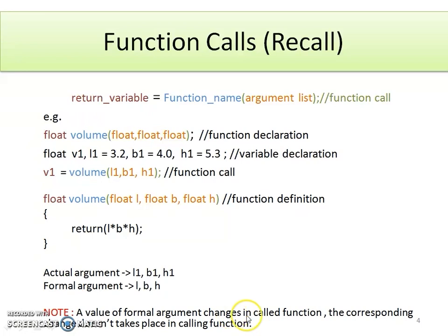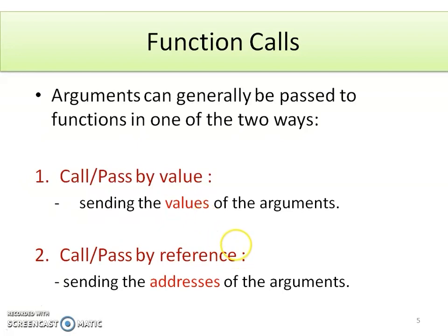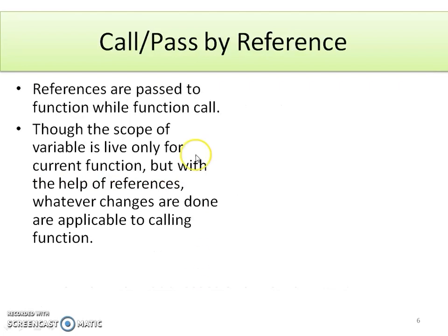When calling a function by value, values are not changed in the calling function. There are two types of function calls: call by value, where the values of arguments are sent, and call by reference, where the addresses of arguments are sent. In today's session we focus on call or pass by reference. References are passed to the function during the function call.